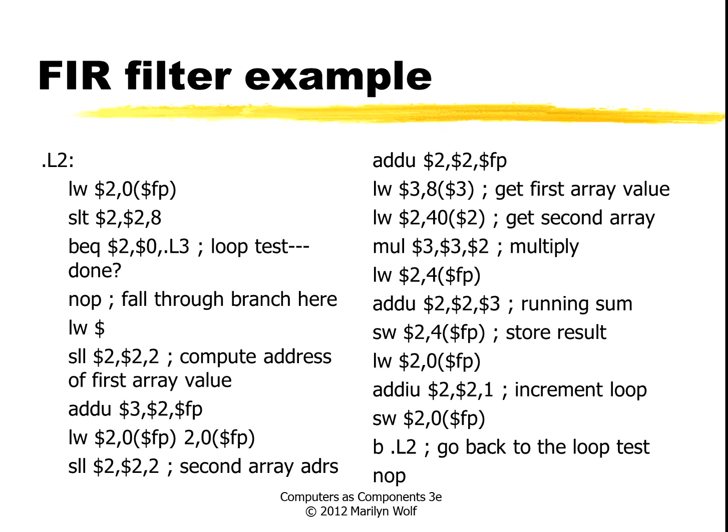Here is an example of code for an FIR filter. This is a label for the loop. We can see we're loading in here, testing the loop to see if we're done. If not, we're following through the branch. We compute the addresses of the first array value, compute the second array address, get the first value, get the second value, multiply, perform a running sum, store the result, increment the loop counter, and then go back to the test.